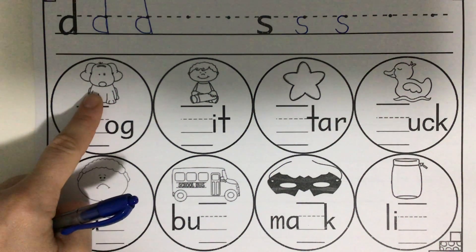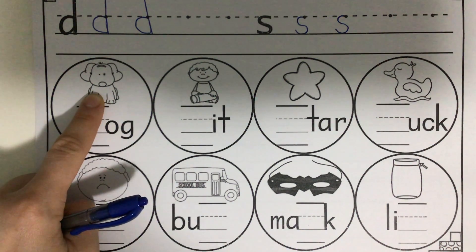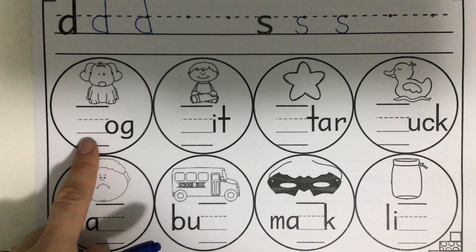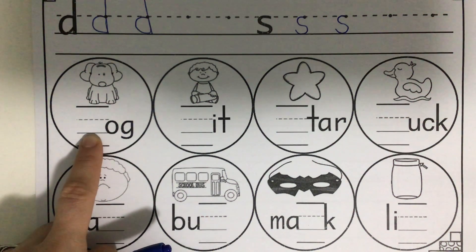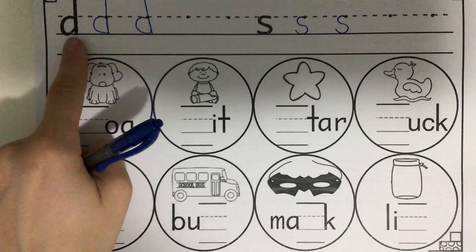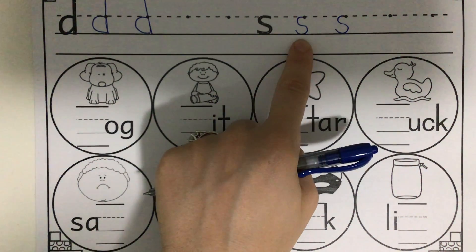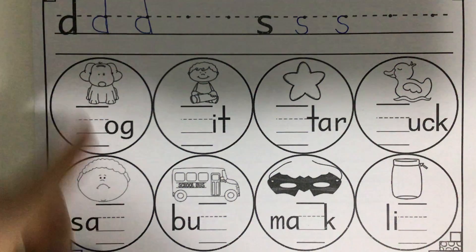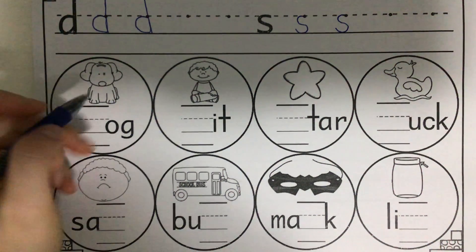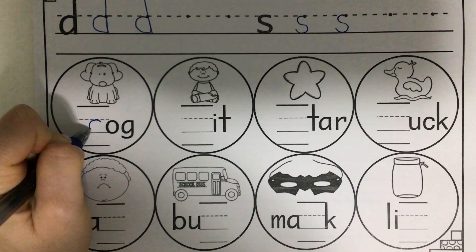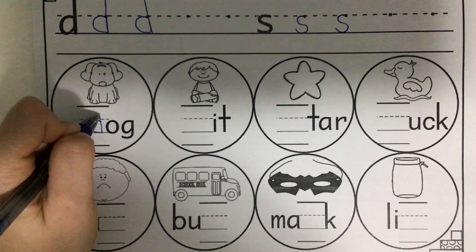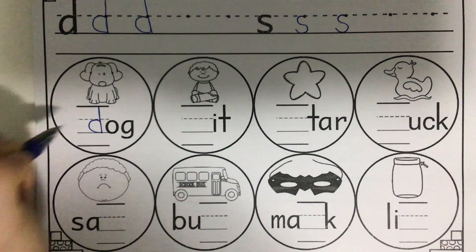Touch the first picture. Say dog. Now I want you to look at the word. What sound is missing? The beginning sound. What is the first sound your mouth makes when you hear the word dog? Do you hear D or S? I hear D. Let's make the letter D together. Point to the plane line, go back on the plane line, down around to the grass line, up to the skyline, straight down to the grass line.